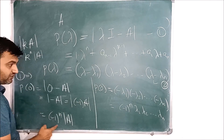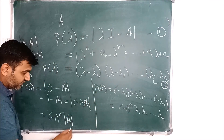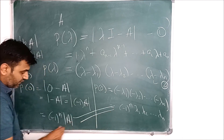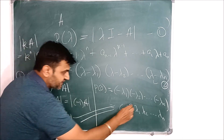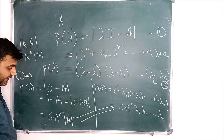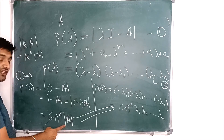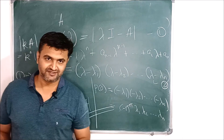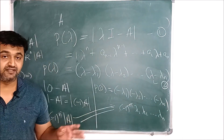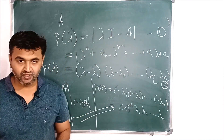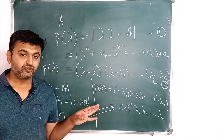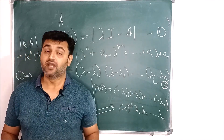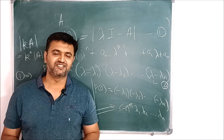This expression is P of 0 from equation 1, and this is also P of 0 from equation 2. Therefore the two are equal, the (−1)^n cancels, and therefore the determinant of a matrix is nothing but the product of its eigenvalues. So that's a very nice result involving the determinant and the eigenvalues. I hope you understood this. If yes, do not forget to like, share, and subscribe. If you have any doubt, you can ask me in the comment section.